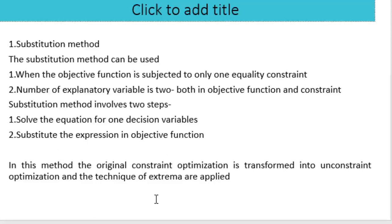The substitution method can be used when the objective function is subject to only one equality constraint. There will be only one constraint, and the number of explanatory variables is two — both in the objective function and the constraint.